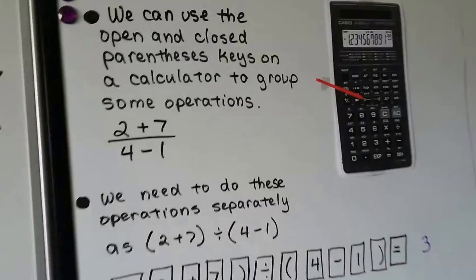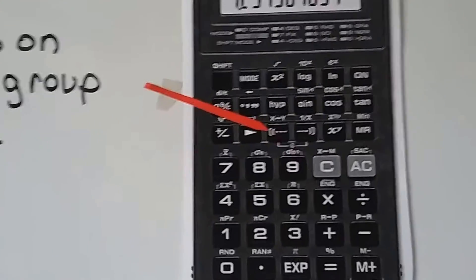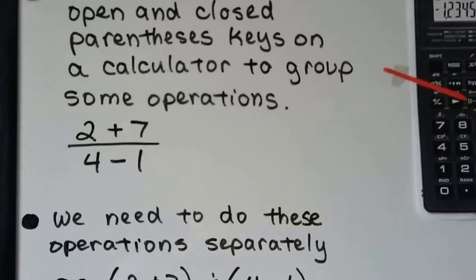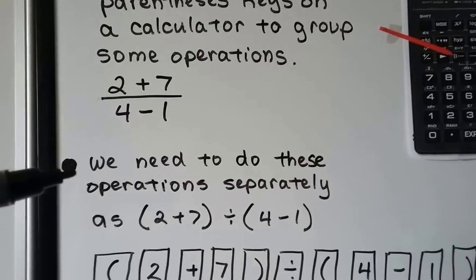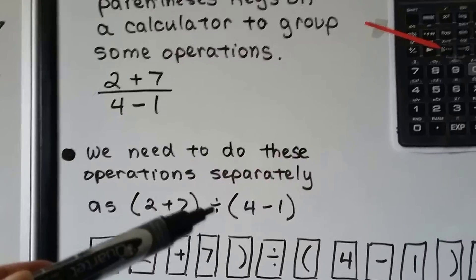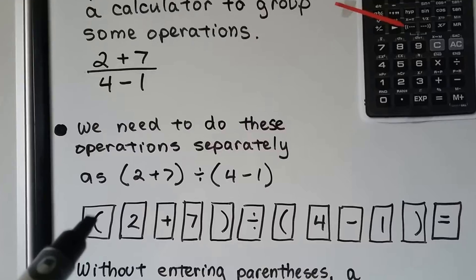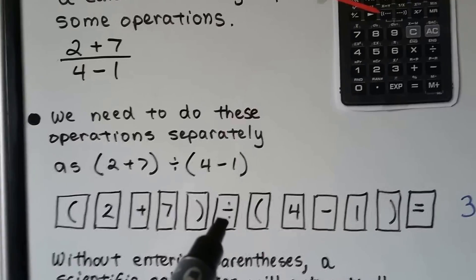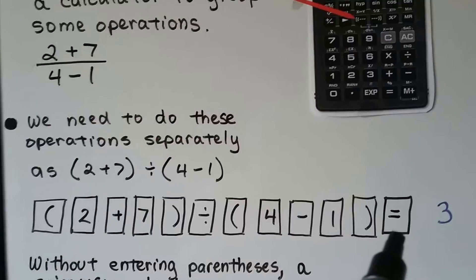We can use the open and close parentheses keys on a calculator to group some operations — right above the 9, there's an open parentheses and a closed parentheses. So for the problem 2 plus 7 divided by 4 minus 1, we need to do those operations separately. Written as a calculator sentence, it would be: open parentheses, 2 plus 7, close parentheses, division sign, open parentheses, 4 minus 1, close parentheses, equals — and we'll get 3.